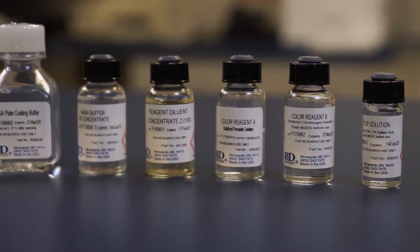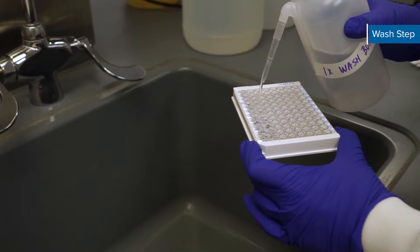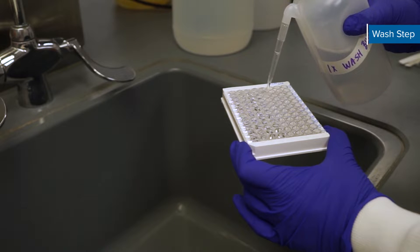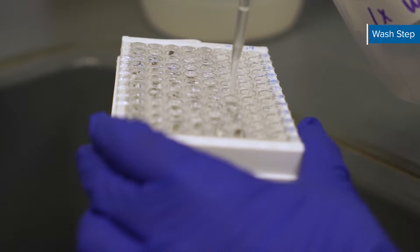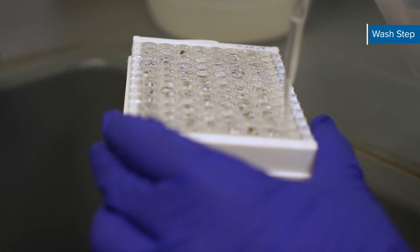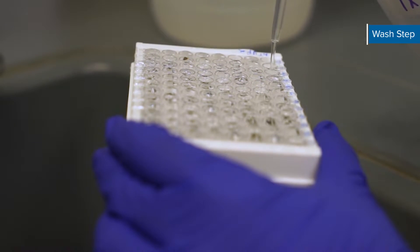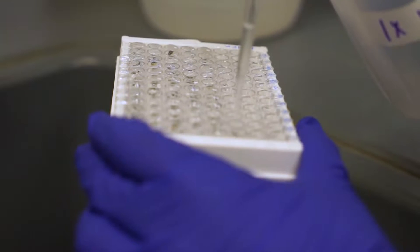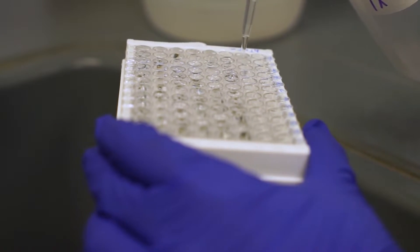On day two ensure that all reagents are equilibrated to room temperature. Aspirate or decant each well from the coated plate and wash by filling each well fully with wash buffer using a squirt bottle, manifold dispenser, or auto washer. Washing with a multi-channel pipette is too gentle and lacks the force to thoroughly flush the wells. Thoroughly decant by blotting the inverted plate against clean paper towels. Repeat this process for a total of three washes.